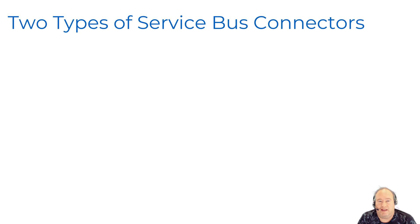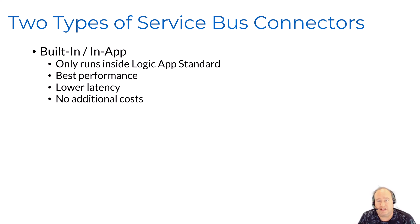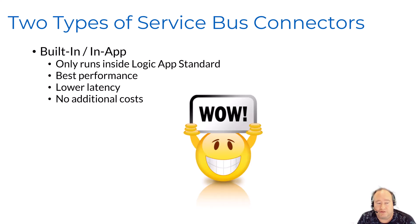Let's get started by taking a look at the two different types of service bus connectors we have available to us. The first type is a built-in or in-app connector. This connector is only available inside of Logic App Standard. Since this is an in-app connector and runs in process with your Logic App, you're going to get the best performance and achieve lower latency using this connector. Plus there's no additional transaction costs for using this connector in your Logic Apps.